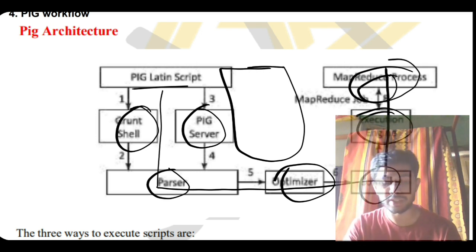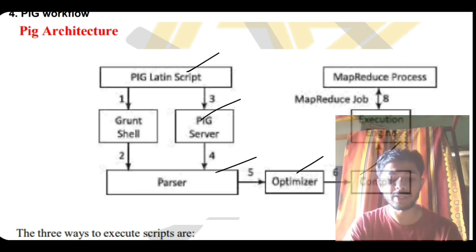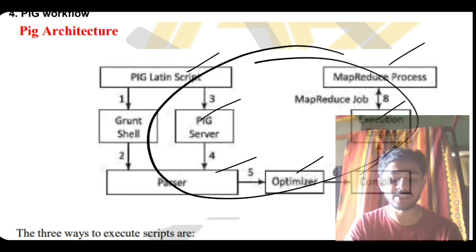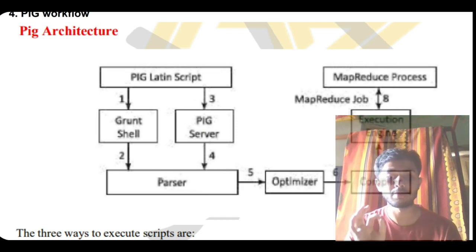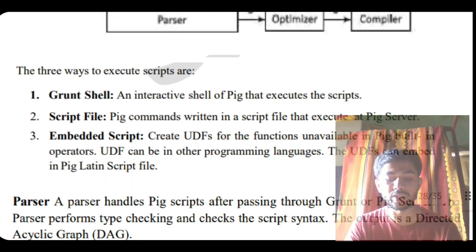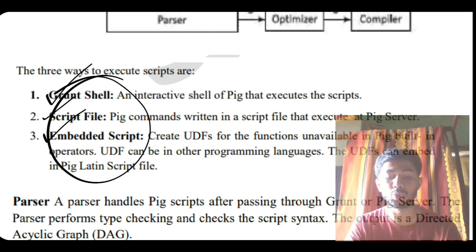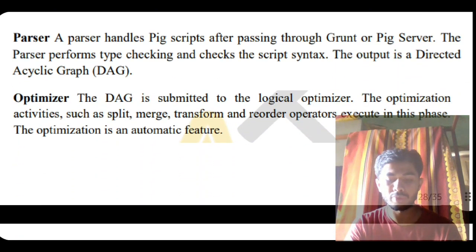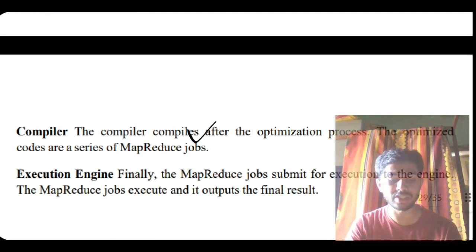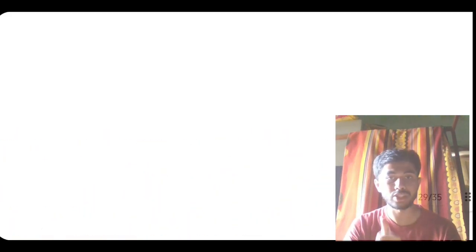Explain all steps in detail in the form of bullet points — first make the diagram, then explain with bullet points, and underline the keywords. Lastly, include the three ways to execute PIG scripts: Grunt Shell, script file, and embedded script. Additional detail on what the parser, optimizer, compiler, and execution engine do is provided in the notes. If you found this video helpful, hit the like button and subscribe — thank you for watching, see you in the next one.